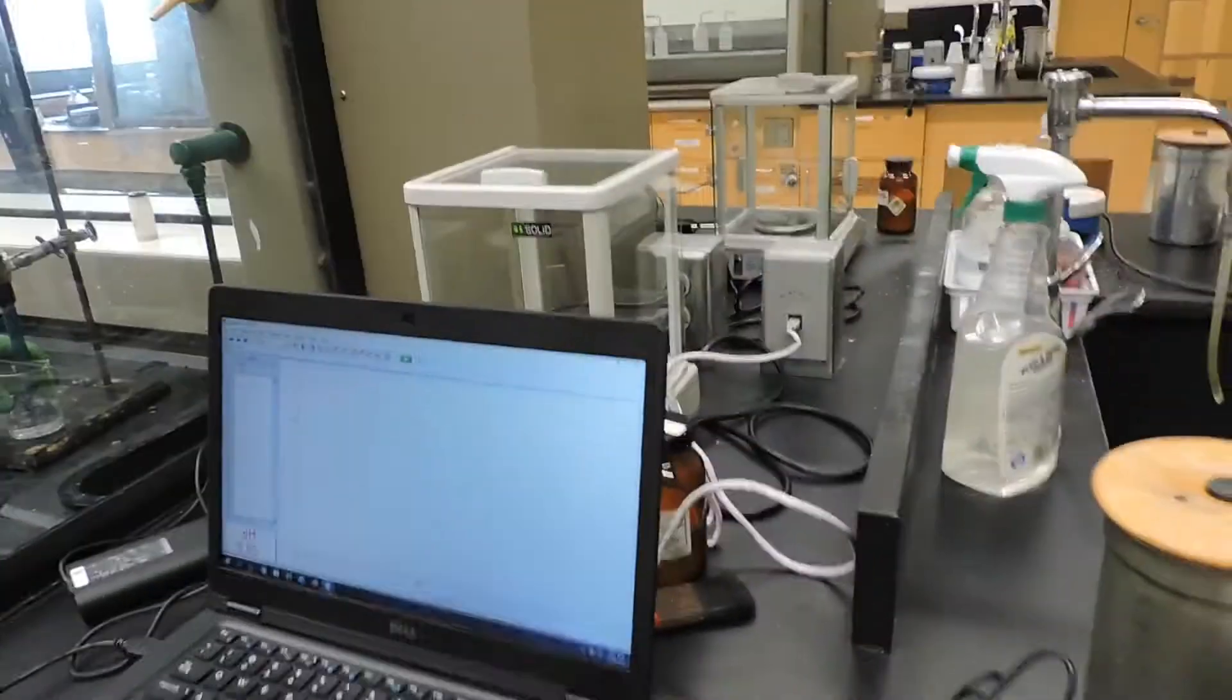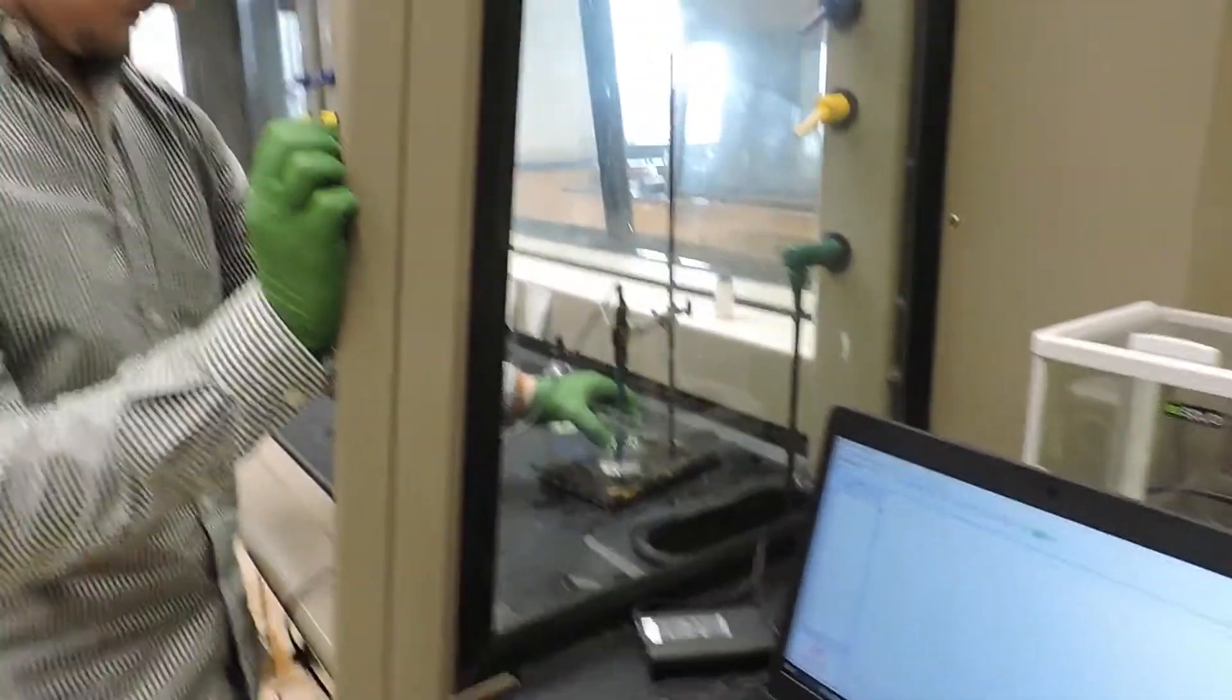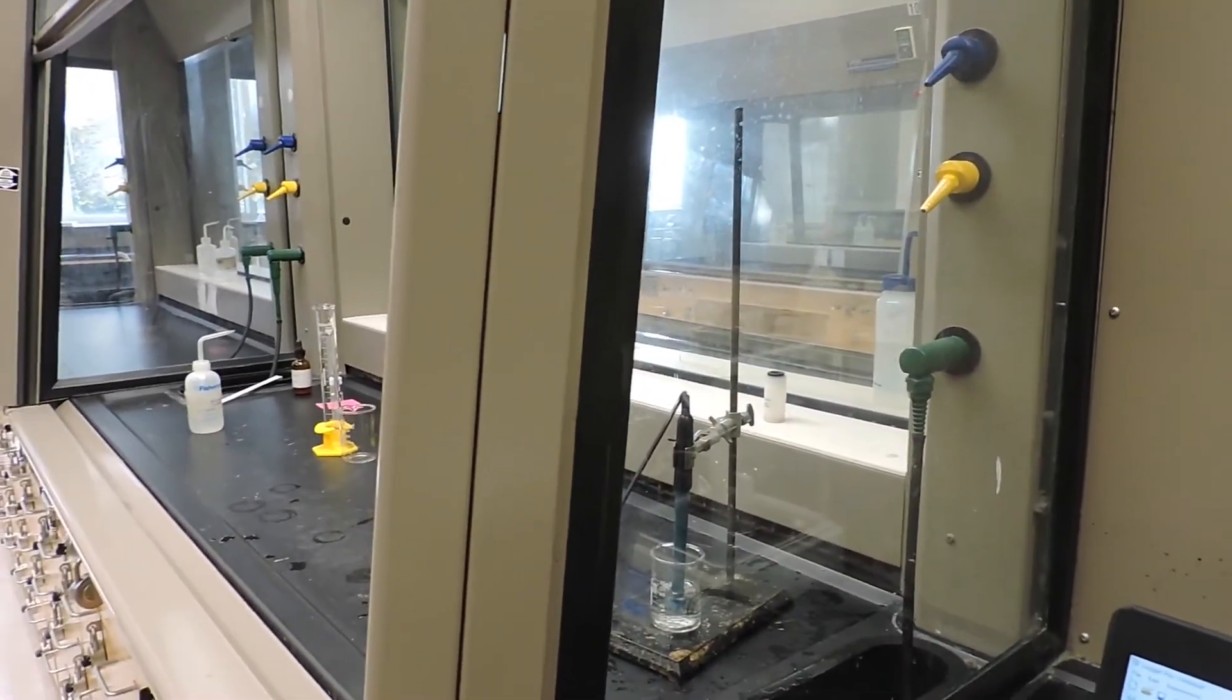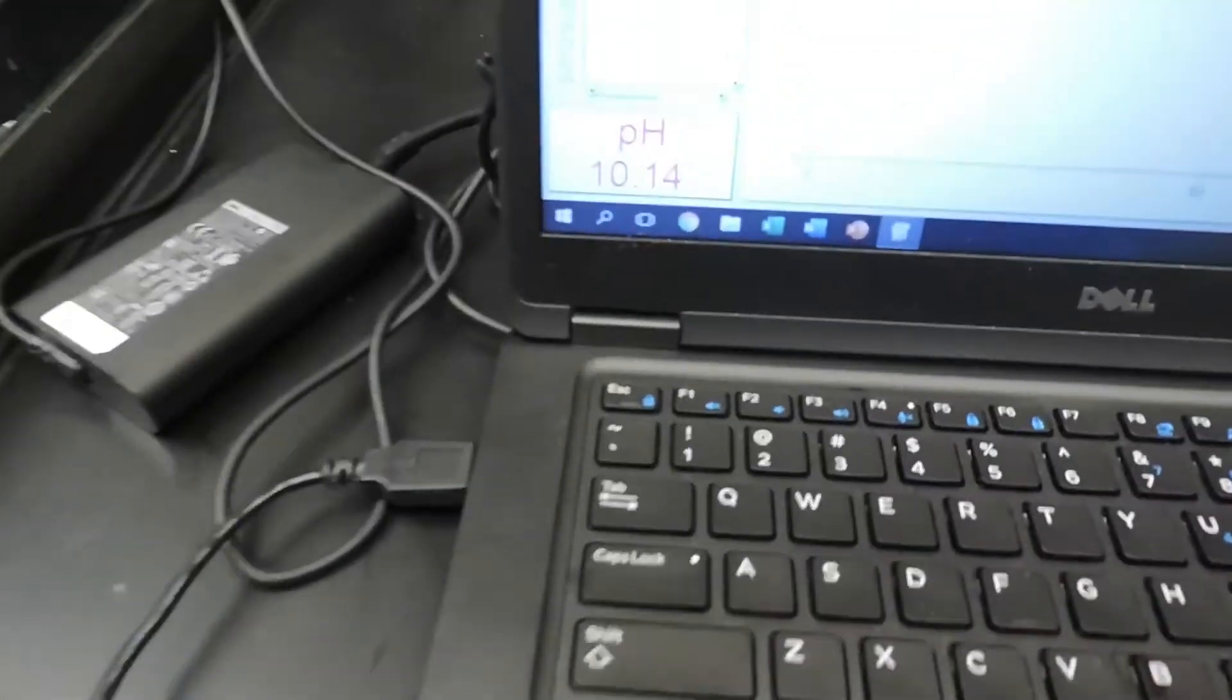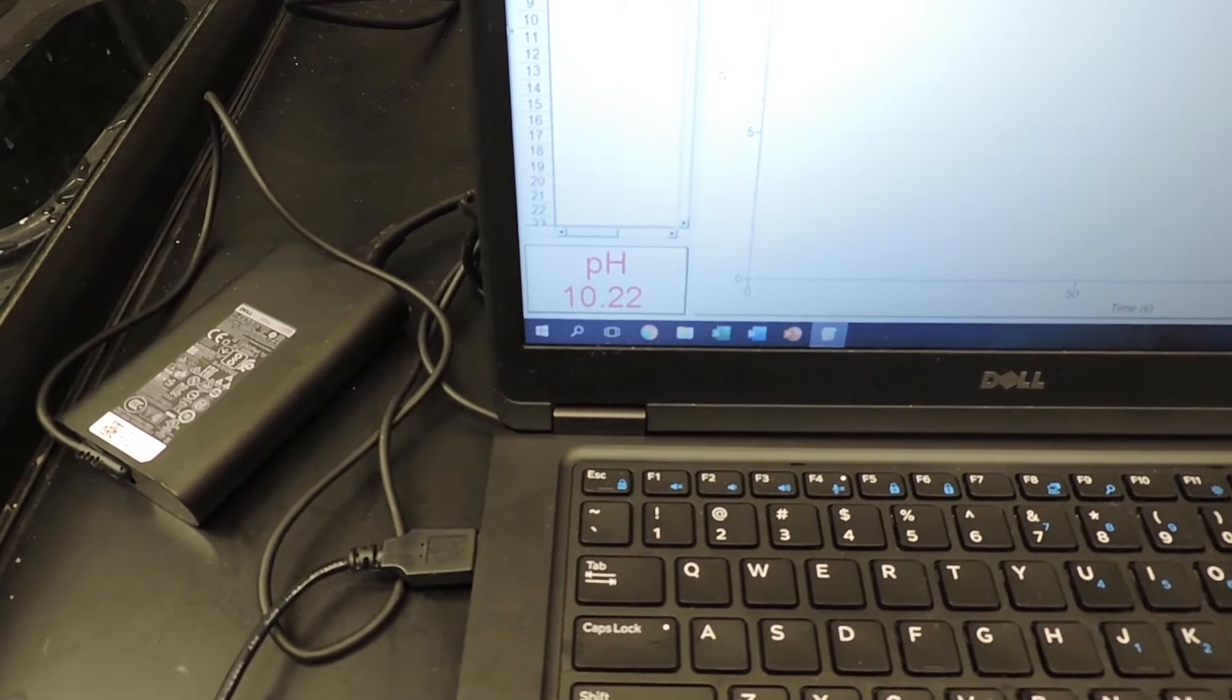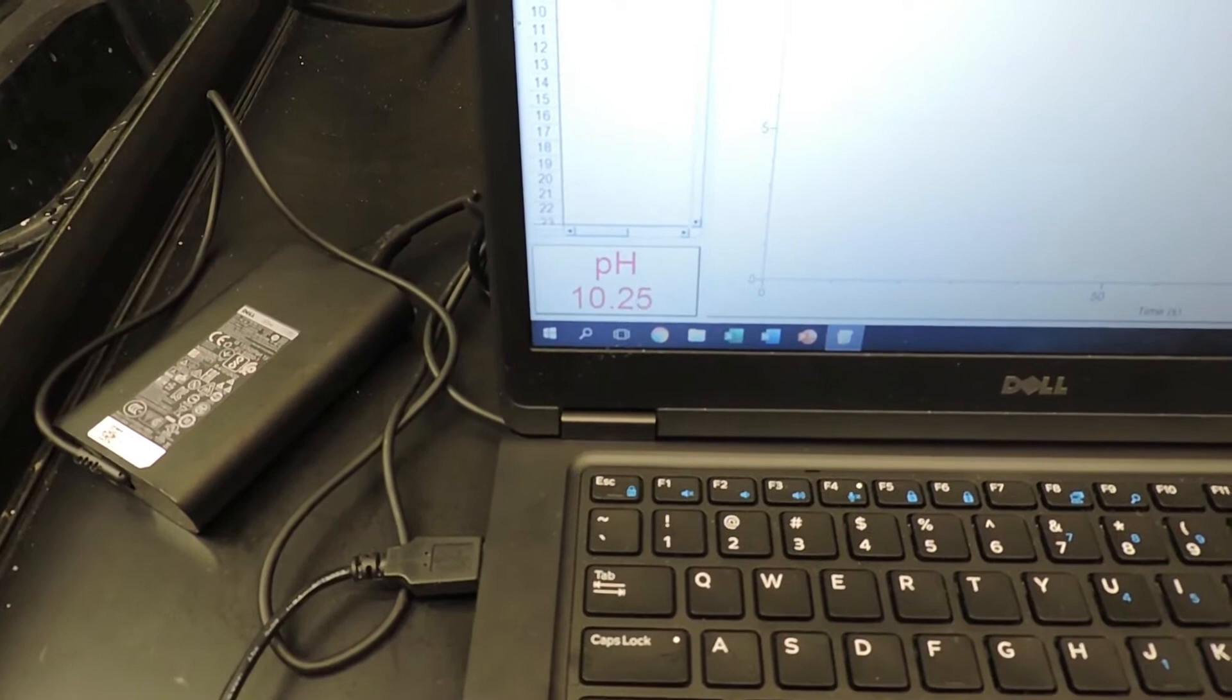Next, we're going to add one drop of the 0.1 molar NaOH and see what the pH is now that we've added that. Did you add it already? So Jared's already added it, so we're going to see what the pH is. We're now at 10.25.